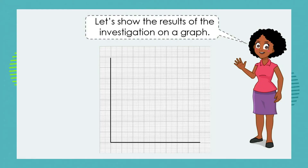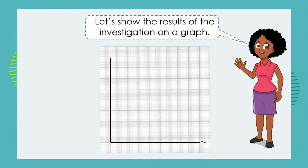We can record our information on a graph, and I want to spend some time focusing on how we draw this graph. First of all, a graph is a drawing so it must have a heading — but let's put the heading on at the end. On our x-axis, that is the horizontal axis, we're going to record time in units of minutes. We're going to divide the axis into two minutes, four minutes, six minutes, eight minutes, ten minutes, and so on.